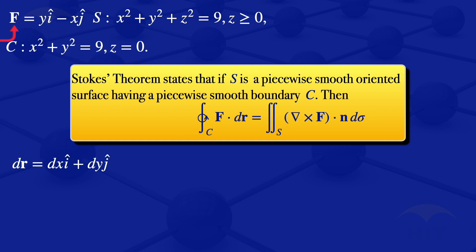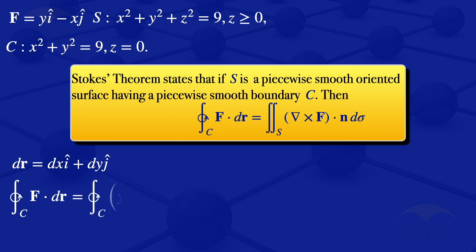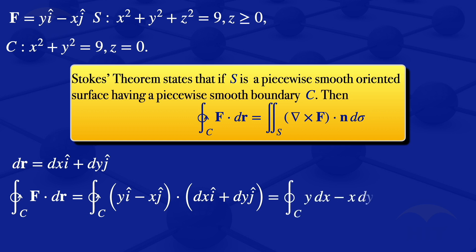I can substitute F and dr into the left-hand integral. We have the integral of F·dr along the closed curve C equals the integral of (yi - xj)·(dx i + dy j). Taking that dot product by multiplying corresponding components, we get the integral over closed curve C of y dx - x dy.